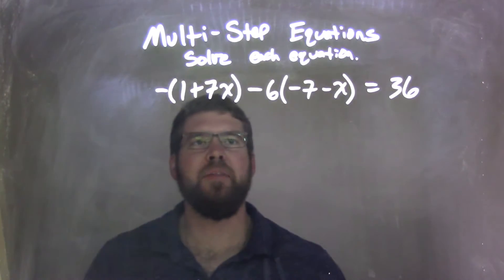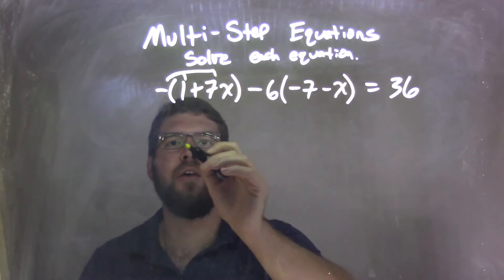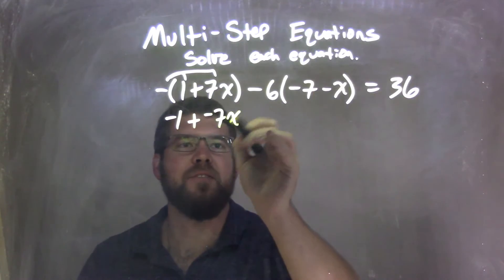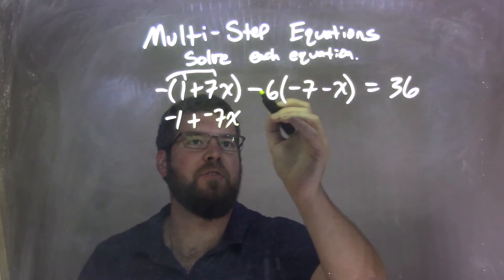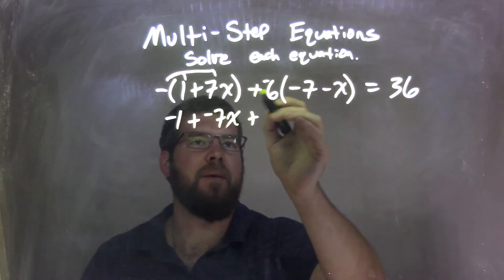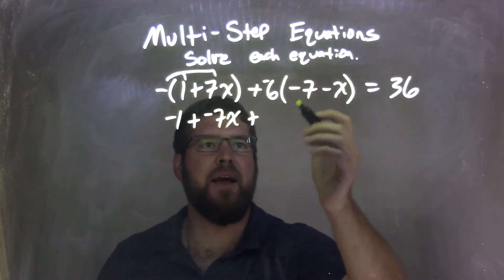Well, what I'm going to do in this problem is a lot of distributing. I'm going to distribute that minus sign across. So negative 1 here, plus a negative 7x. Then we're going to distribute this. So that minus 6 is plus a negative. I like to do that if I have a minus then minus a number I have to distribute, I make it plus a negative.